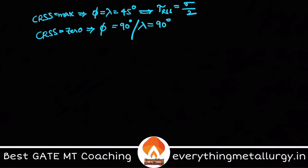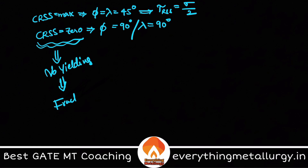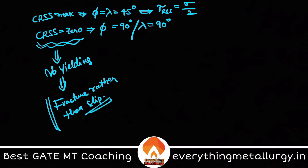When CRSS is zero, it represents that there is no active slip system available for deformation, so there will be no yielding. If you still apply the load, the material will fracture rather than slip. CRSS being zero means there is no dislocation traveling on that particular slip plane, so no plastic deformation occurs — only sudden fracture can be observed.